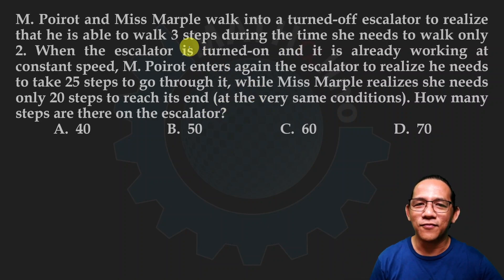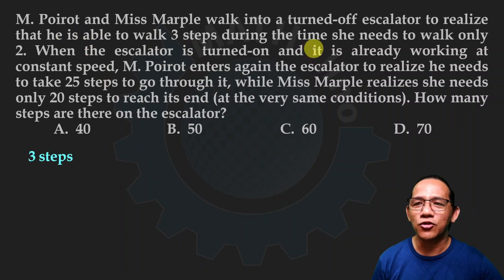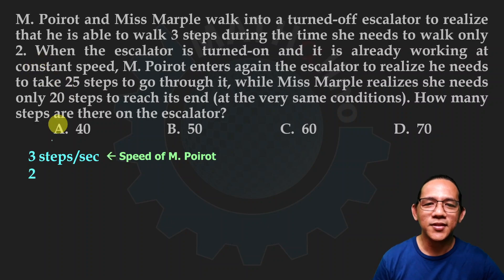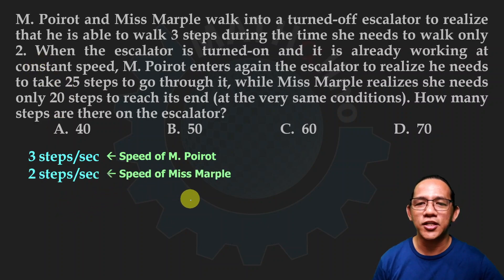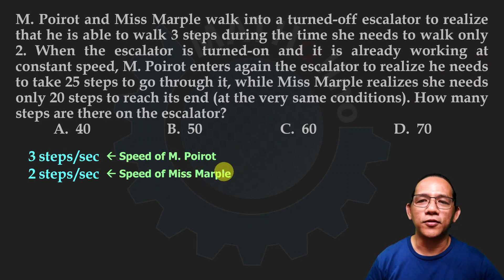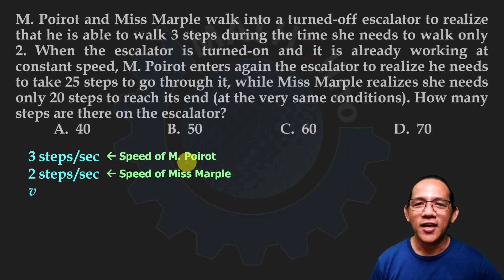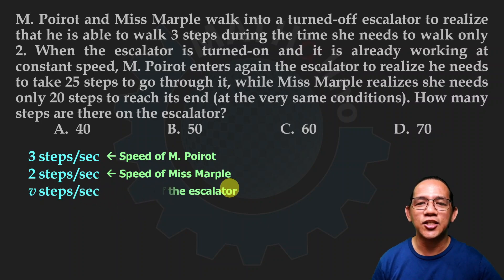So the speed of M. Poirot is three steps per second. In that same one second, Ms. Marple can make two steps — two steps per second. That is Ms. Marple's speed. Take note that when the escalator turns on, all conditions remain the same — those speeds still apply. Let's call V the velocity or speed of the escalator in steps per second.